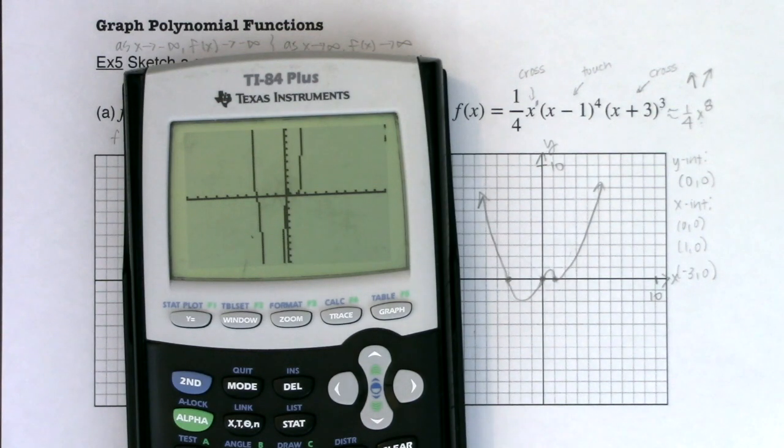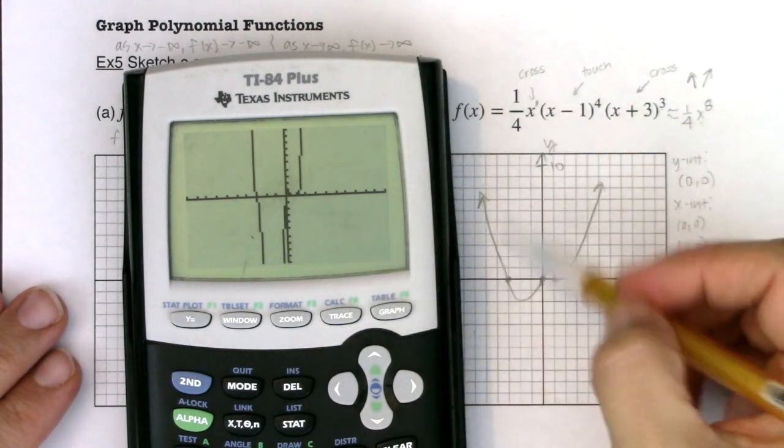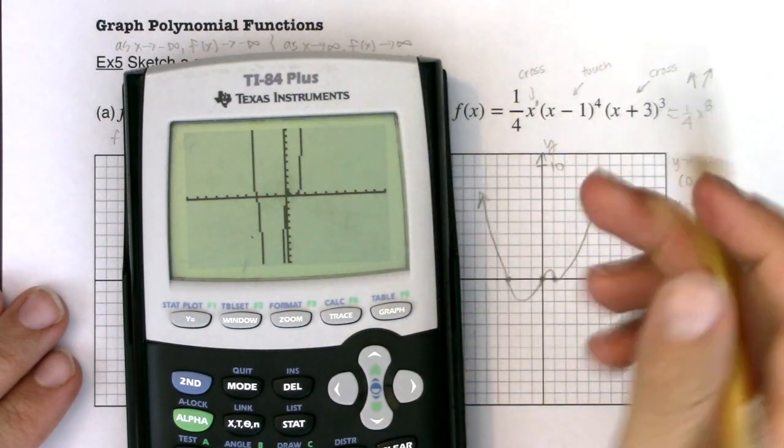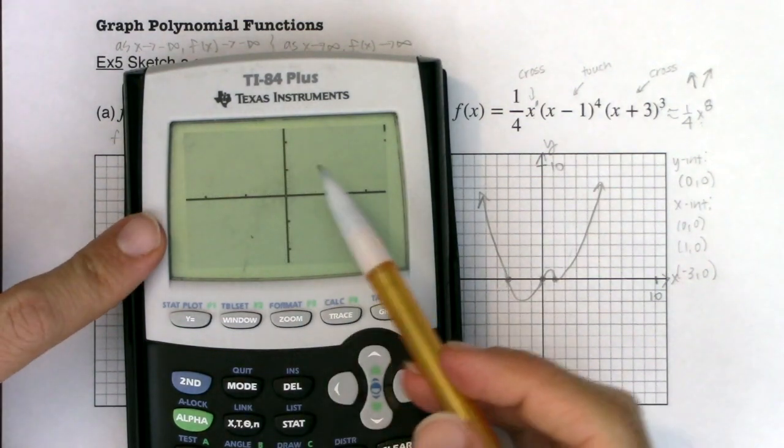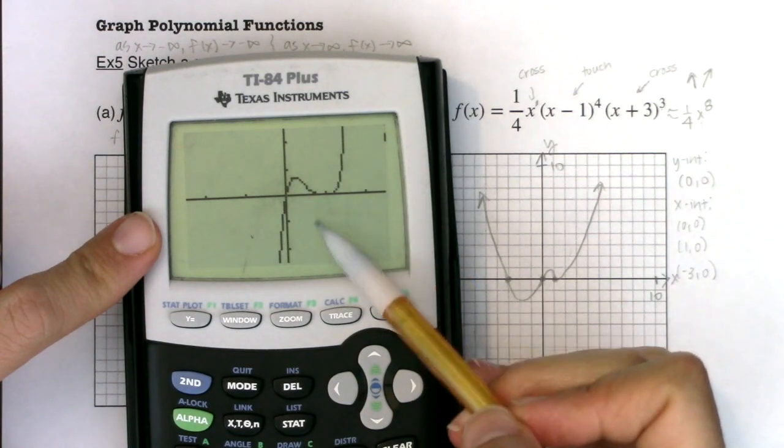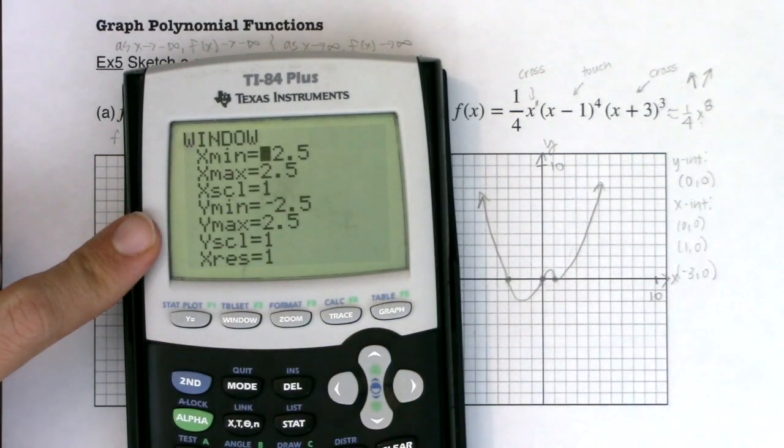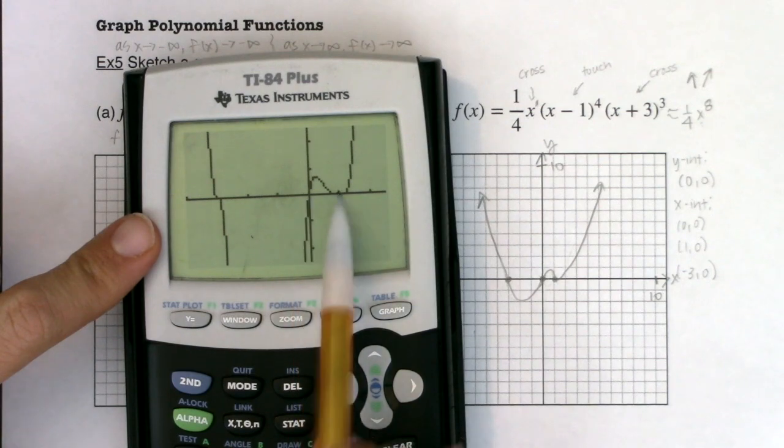For my x-intercepts, how many do I have? It looks like I have one at zero, zero, I have one at one, zero, and I have one at negative three, zero. So with all that, I'm going to go label and scale my axes. Oh, I know what I forgot to address, end behavior. Again, I have an odd degreed polynomial, and I have a positively coefficient, so my end behavior is still right arrow up, left arrow down. Now let me go through. We've got zero, zero, I've got one, zero, and I've got negative three, zero. I've got left end down, right end up, so let's see what we're supposed to do.